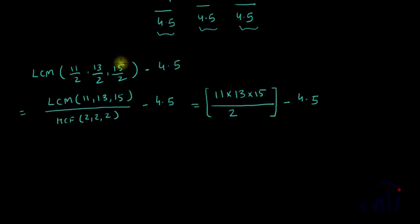The product of 11, 13, and 15 is 2145. So 2145 divided by 2 is equal to 1072.5, and then we have to subtract 4.5 from this. This will give you 1068.